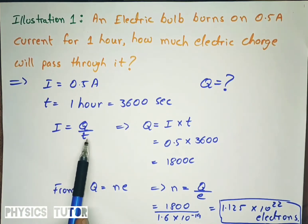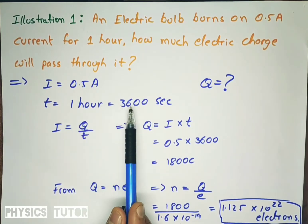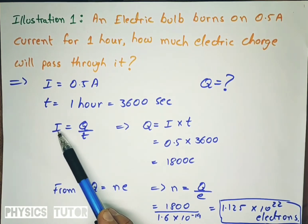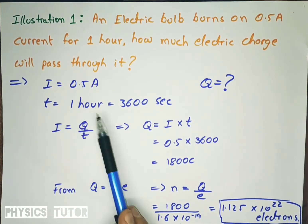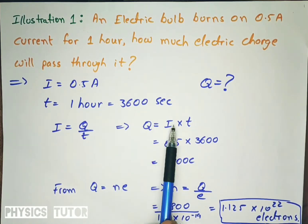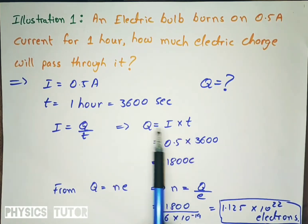Q is equal to I into t. This is derived from the formula I is equal to Q by t, which we saw in the last lecture. We are making Q as subject, that is charge as subject, I into t in multiplication. So I is equal to 0.5 ampere and t is 3600, so ultimately we got Q is equal to 1800 coulomb.